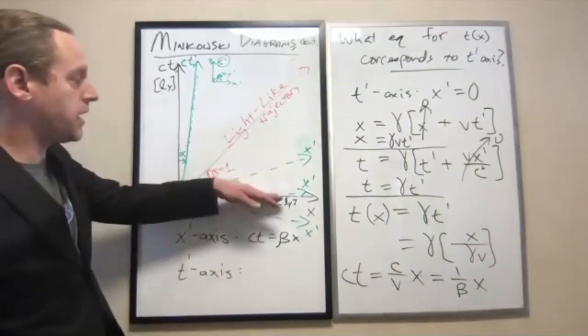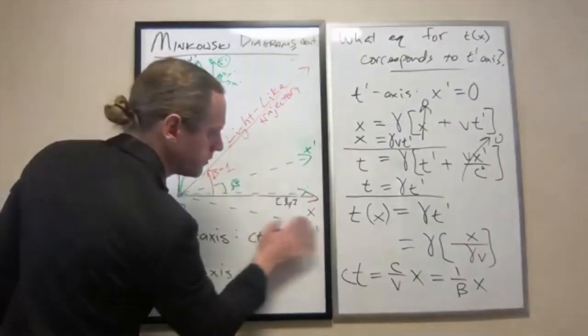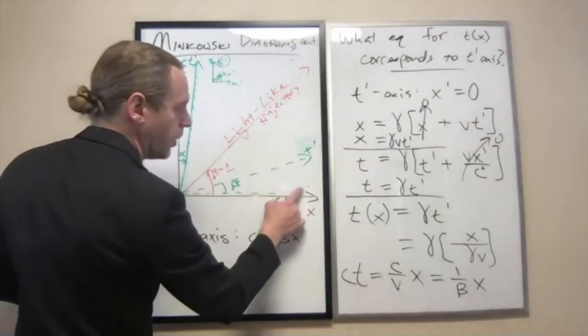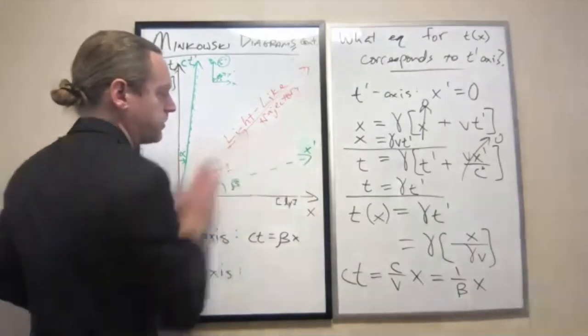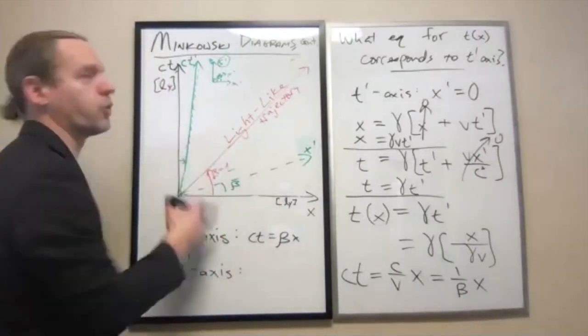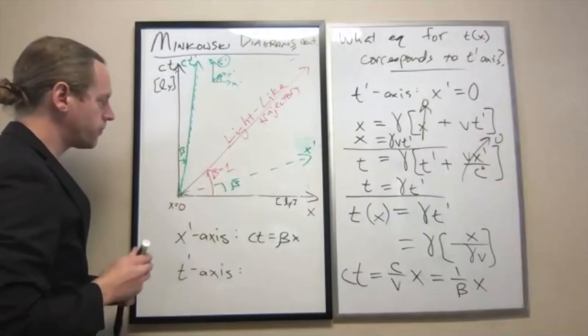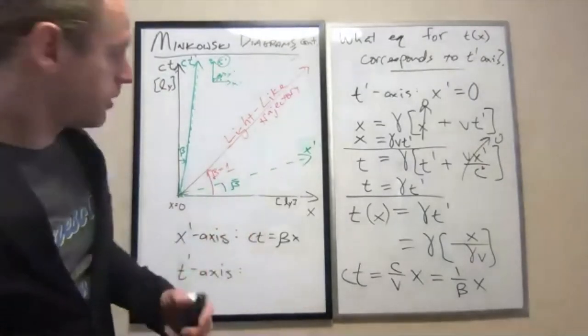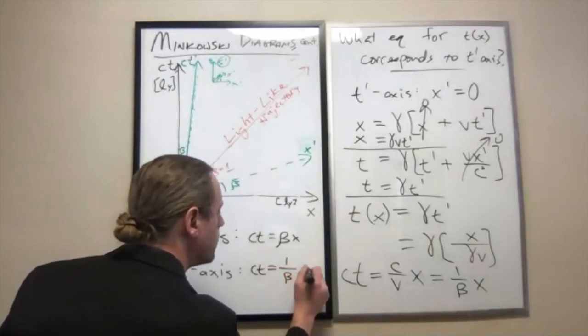So this now becomes 1 over beta times x. And the fact that this beta here, which separated the x prime axis from the x axis, by the way, we can get rid of these two. Assuming that v we're treating as positive, we now know that beta has to be up like that. Those other two were not possible. So we know that beta is positive here. This right here, which I said before we were calling alpha just for no reason at all, we now can rewrite as shifted by a factor of beta. And specifically the way to think of that. So our equation here, we can write ct equals 1 over beta times x.